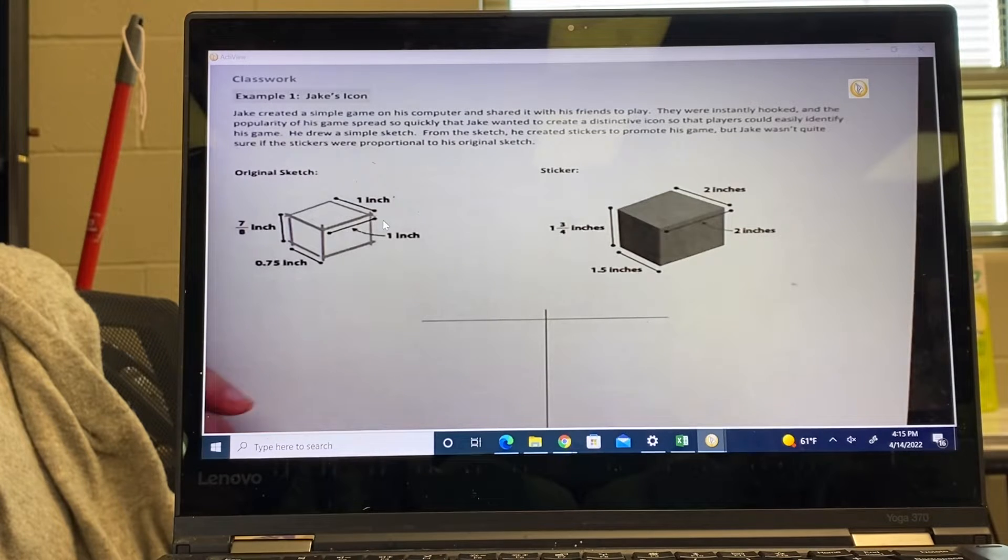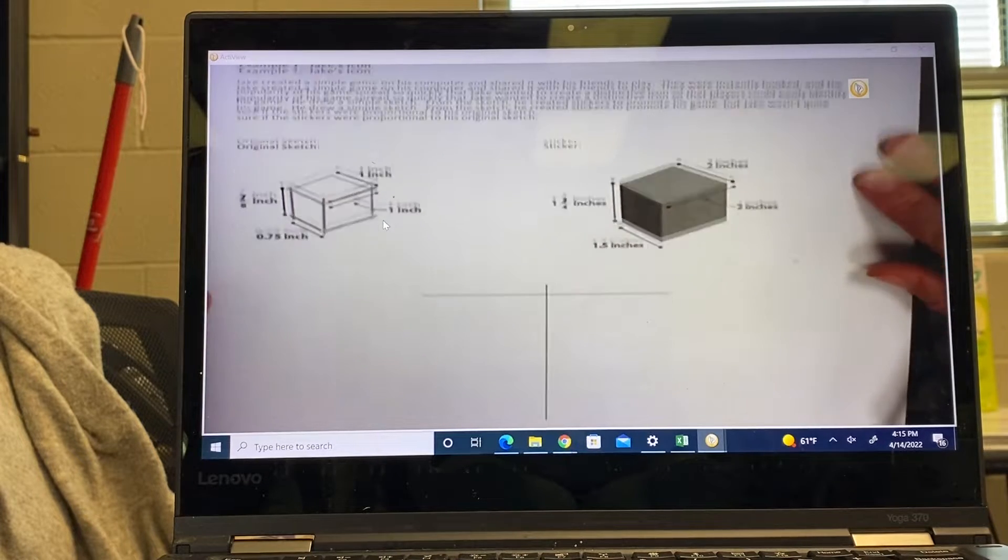He drew a simple sketch. From the sketch he created stickers to promote his game, but Jake wasn't quite sure if the stickers were proportional to his original sketch. So we are going to take this sketch right here and we are going to line up the different dimensions.